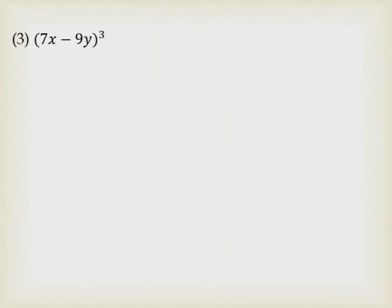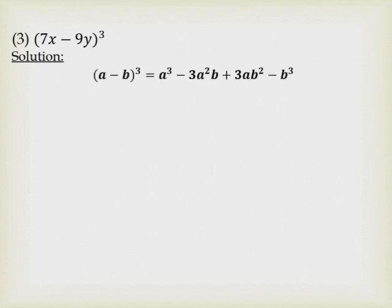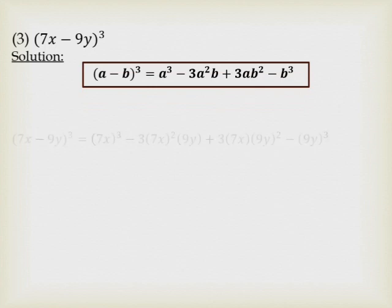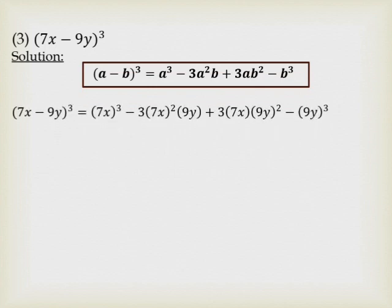Next is question number 3: (7x minus 9y) cubed. Write the identity (a minus b) cubed and put a box around it. For the sum (7x minus 9y) cubed, comparing with the identity we find a means 7x and b means 9y. So wherever a appears put 7x, and wherever b appears put 9y. The expansion becomes: (7x) cubed minus 3 times (7x) squared times 9y plus 3 times 7x times (9y) squared minus (9y) cubed.